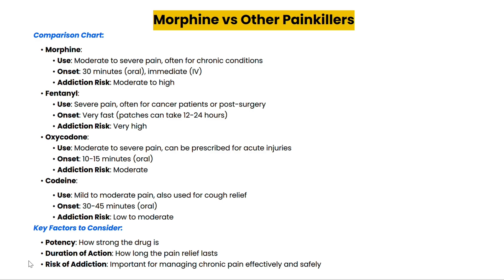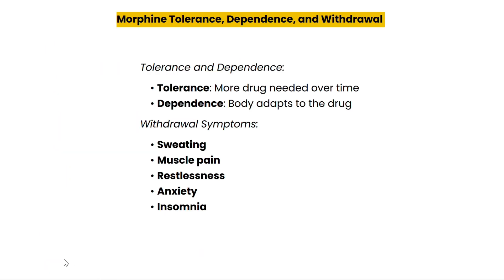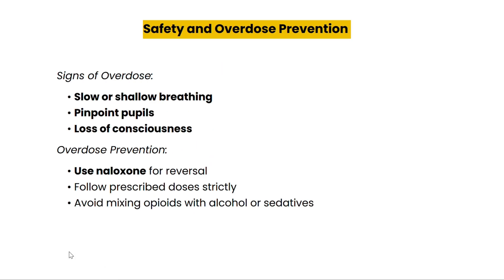It's crucial to talk about overdose prevention. Morphine overdose can lead to life-threatening complications, particularly respiratory failure, which occurs when breathing becomes dangerously slow or shallow. This is often accompanied by symptoms like pinpoint pupils and loss of consciousness. To counteract an overdose, healthcare professionals use naloxone, which rapidly blocks the effects of opioids and can restore normal breathing. To prevent overdose, always follow prescribed doses strictly and never mix opioids with alcohol or sedatives, as this combination can amplify the risk of severe respiratory depression.